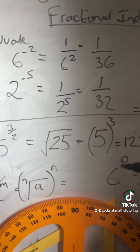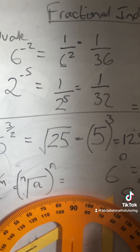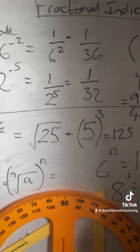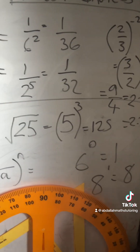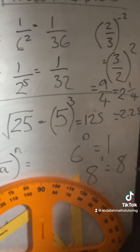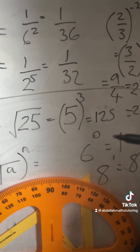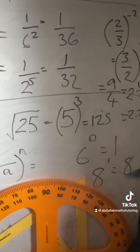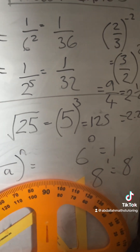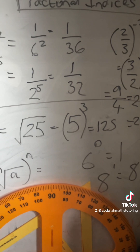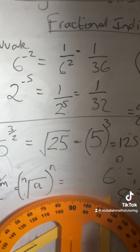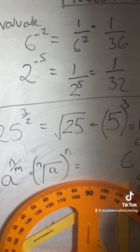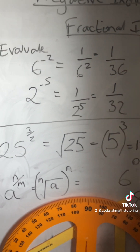Make sure you're happy with your negative indices, fractional indices, and the laws of indices for multiplication, division, and the power to power rule — and obviously powers of 0 and powers of 1. Any number to the power of 0 is equal to 1, and any number or letter to the power of 1 is just itself. And remember, the negative index does the reciprocal — it does 1 over, it flips the fraction.